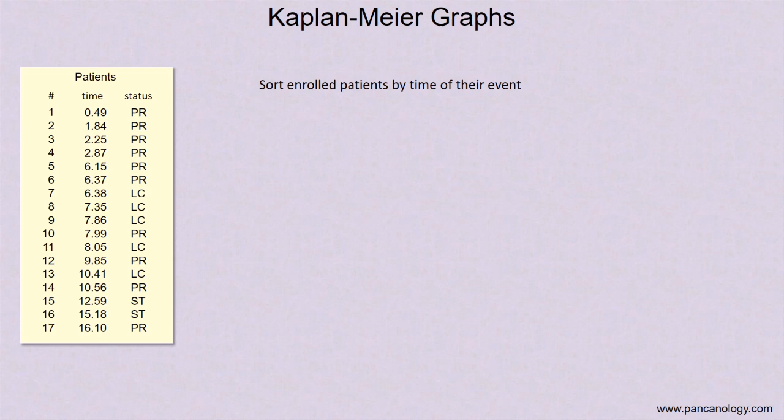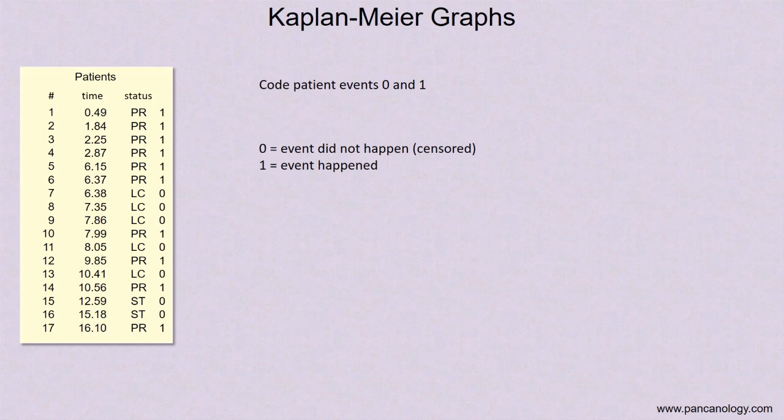The patient status we wrote earlier is really more information than we need to draw the Kaplan-Meier graph. What we're really interested in is whether an event happened or not. In a progression-free survival curve, the event is disease progression, which we identify by measured tumor growth. In an overall survival graph, the event would be patient death. Since we only care about whether the event happened or not, we'll replace all the PR status, or tumor progressed, with a 1, meaning the event happened. With all other patients, the tumor growth event did not happen and we replace them all with 0.